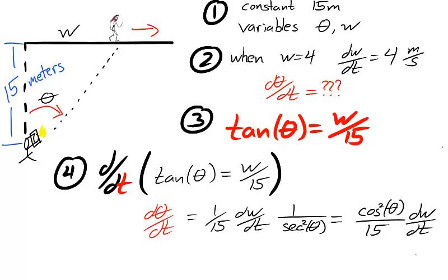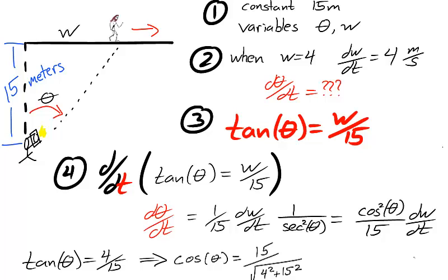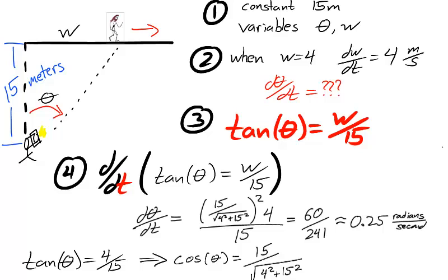Now we run into an issue, because we know w equals 4, dw dt is 4, but we don't know theta. We can use our original equation, substituting 4 in for w, to find that tangent of theta is equal to 4 over 15. And with a bit of trigonometry, that is equivalent to saying that cosine theta is 15 over the square root of 4 squared plus 15 squared. Substituting for cosine theta and dw dt, we obtain d theta dt as approximately 0.25 radians per second.